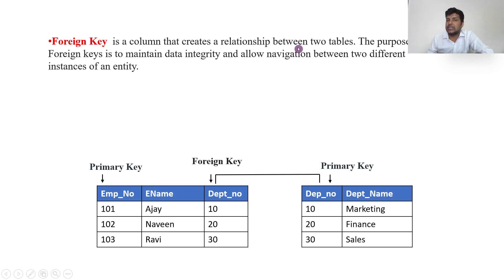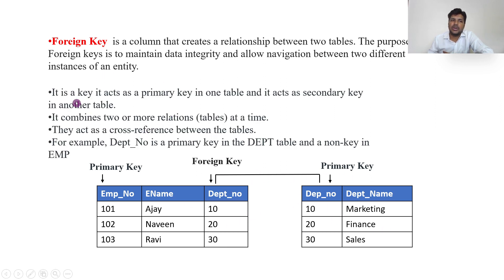A foreign key is a column that creates a relationship between two tables. Its purpose is maintaining data integrity — without a foreign key, wrong values could be entered. It allows navigation between two different instances of an entity. Important points: a foreign key acts as a primary key in one table and a non-primary key in another, combining two tables and providing cross-referencing. For example, department number is a primary key in the department table and a non-key in the employee table.